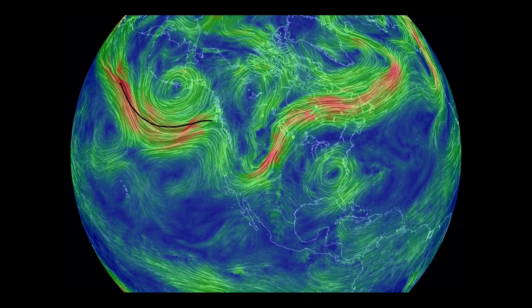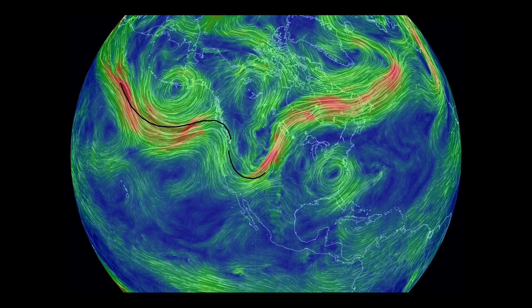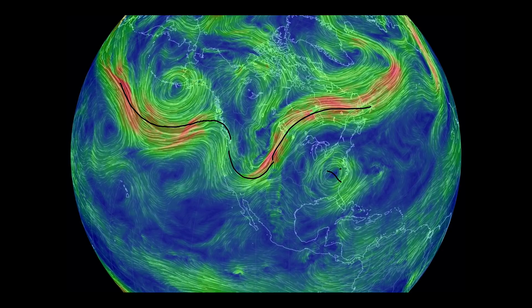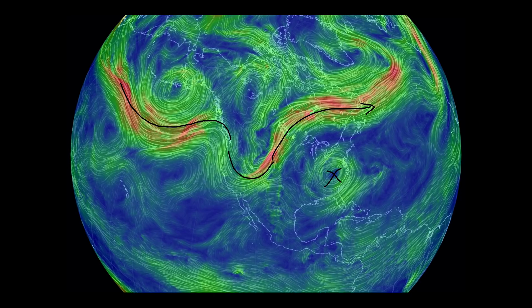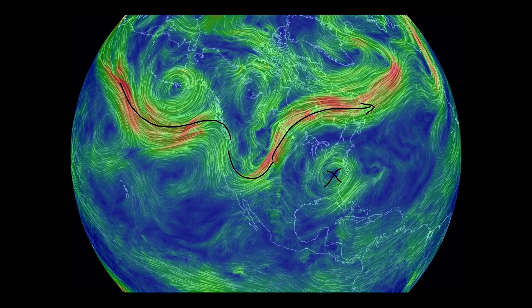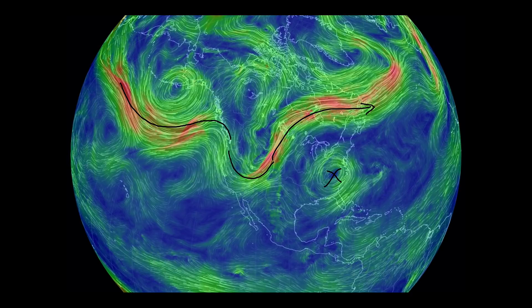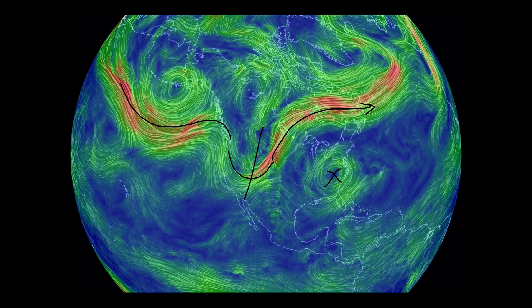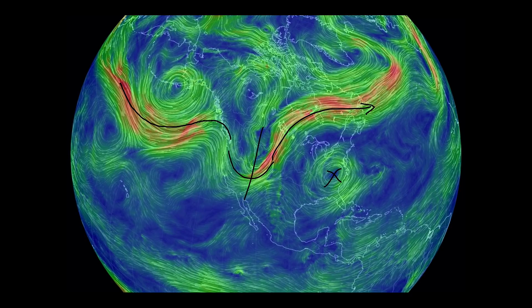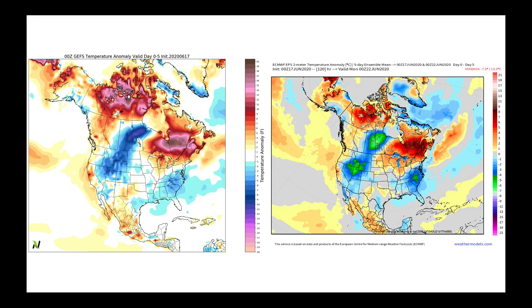Now let's talk about temperatures. The jet stream right now is set up with a trough sneaking into the Gulf of Alaska, a ridge building over the west, then diving into a pretty sizable trough before running over the top of a cutoff low that's keeping things really cloudy, cool, and very wet over parts of North Carolina and Virginia. The trough behind it is moving relatively slowly. The heat that was in the central plains is building toward the Great Lakes states — over the next five days, a big warm-up is happening there, but behind the trough temperatures will drop off.